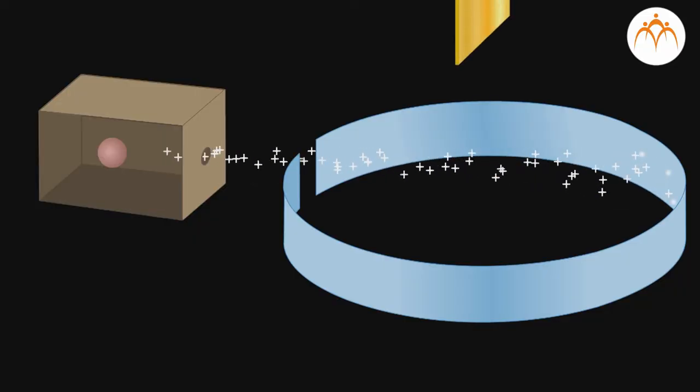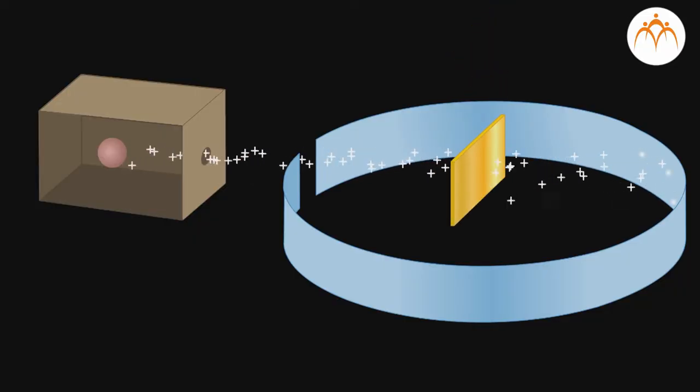He took a thin gold foil. This gold foil was bombarded with alpha particles which are emitted by a radioactive element. Alpha particles are positively charged. We also know them as helium nuclei.